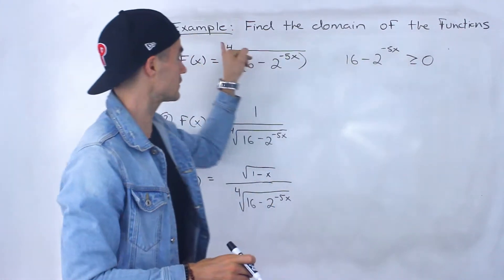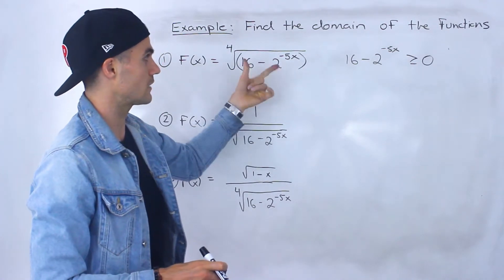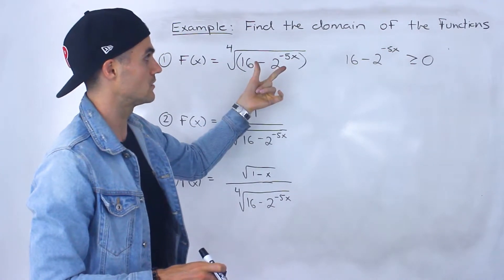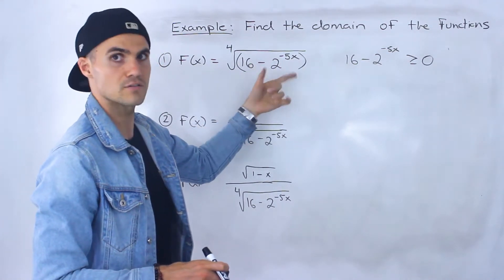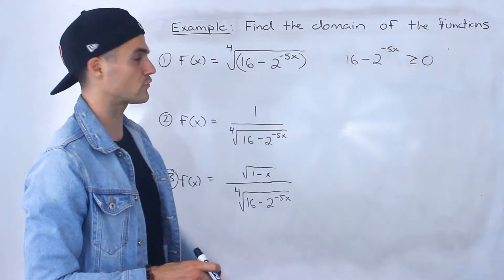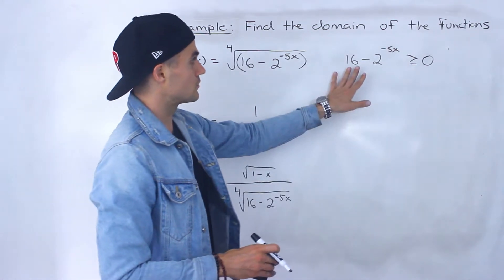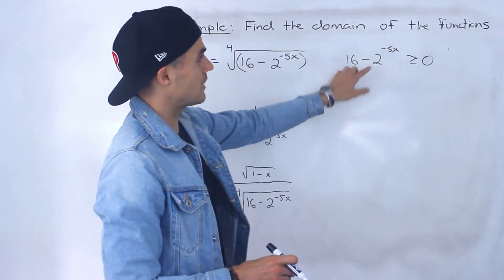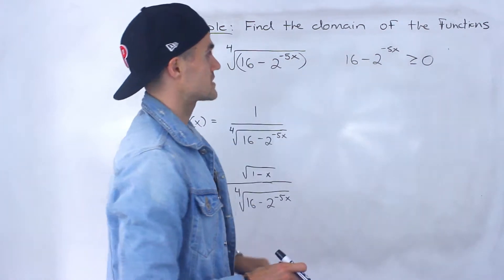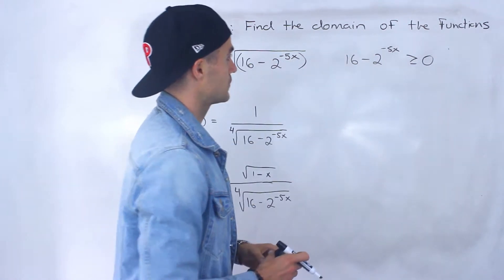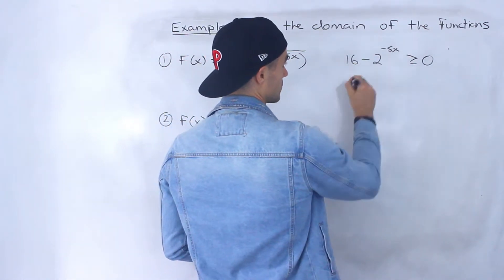So this expression has to be greater than or equal to zero. It could equal zero — we could take the fourth root of zero, that would just be zero. We could take the fourth root of a positive. We just can't take the fourth root of a negative. So what we need to do now is isolate for x, which is going to be a little tricky but not too bad.